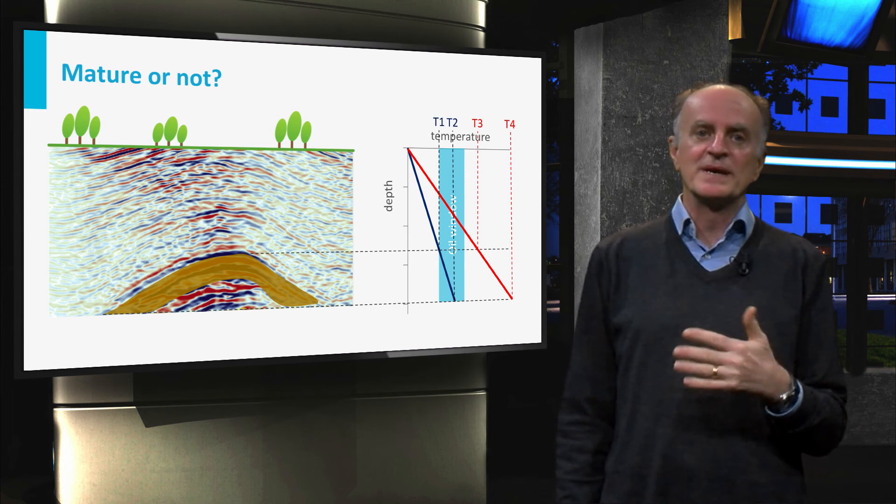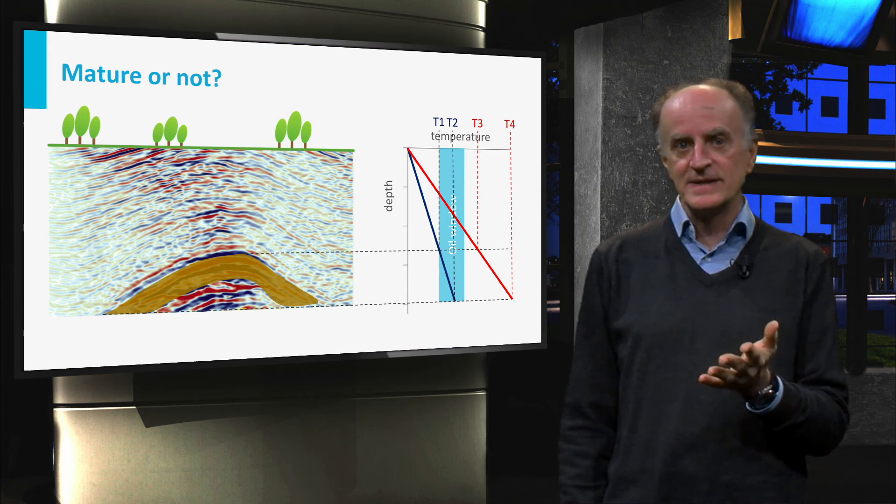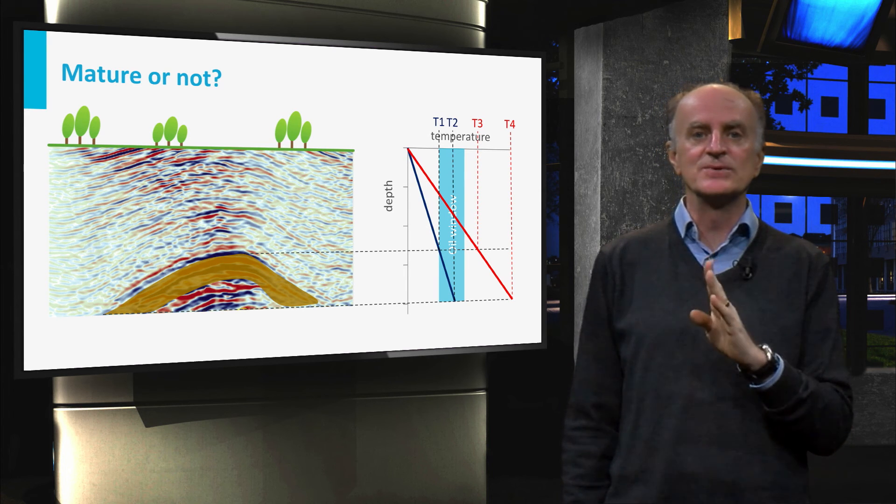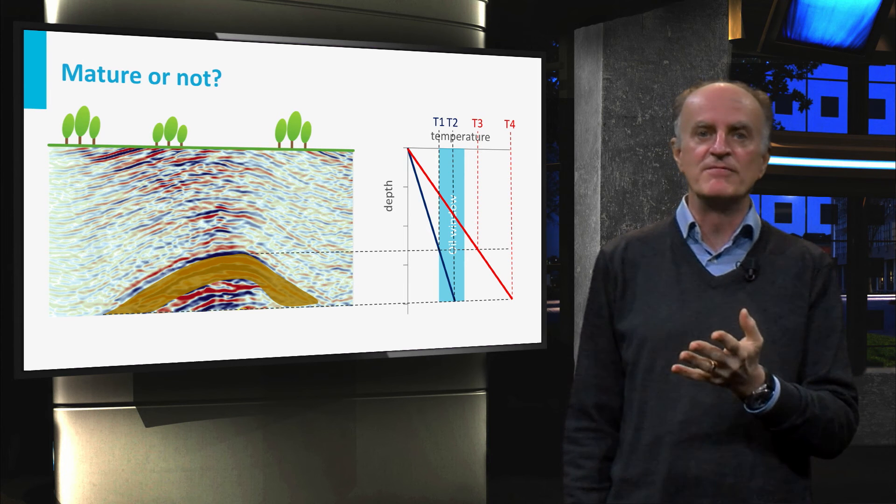If temperatures are controlled by the gradient shown with a blue line, then the source rock will be at temperatures between T1 and T2 and the rock is mature and fully producing.